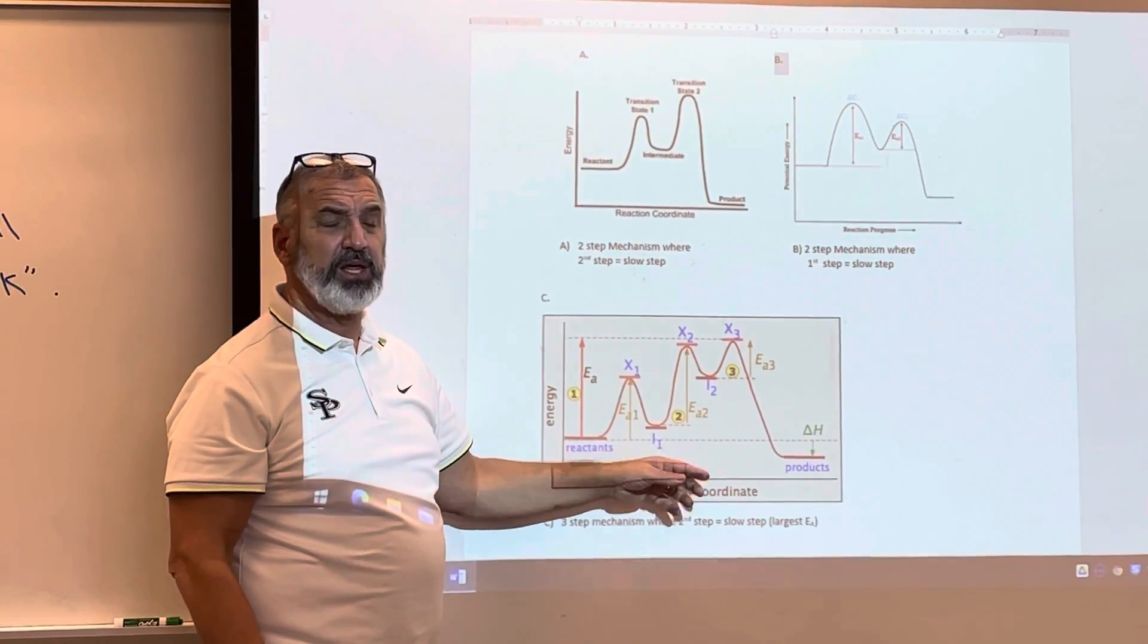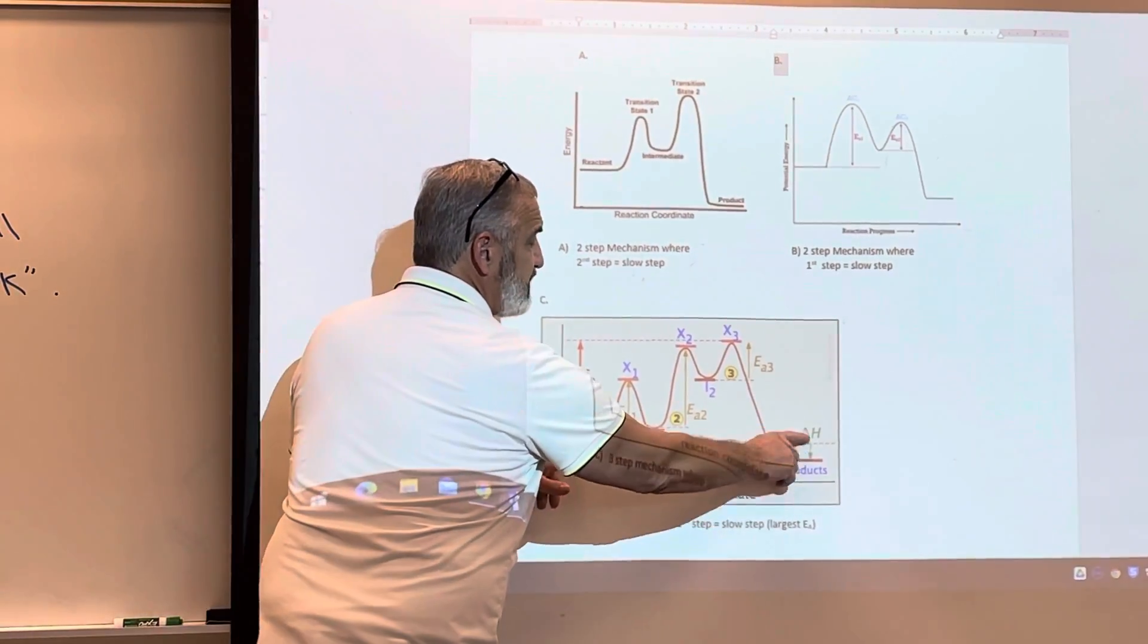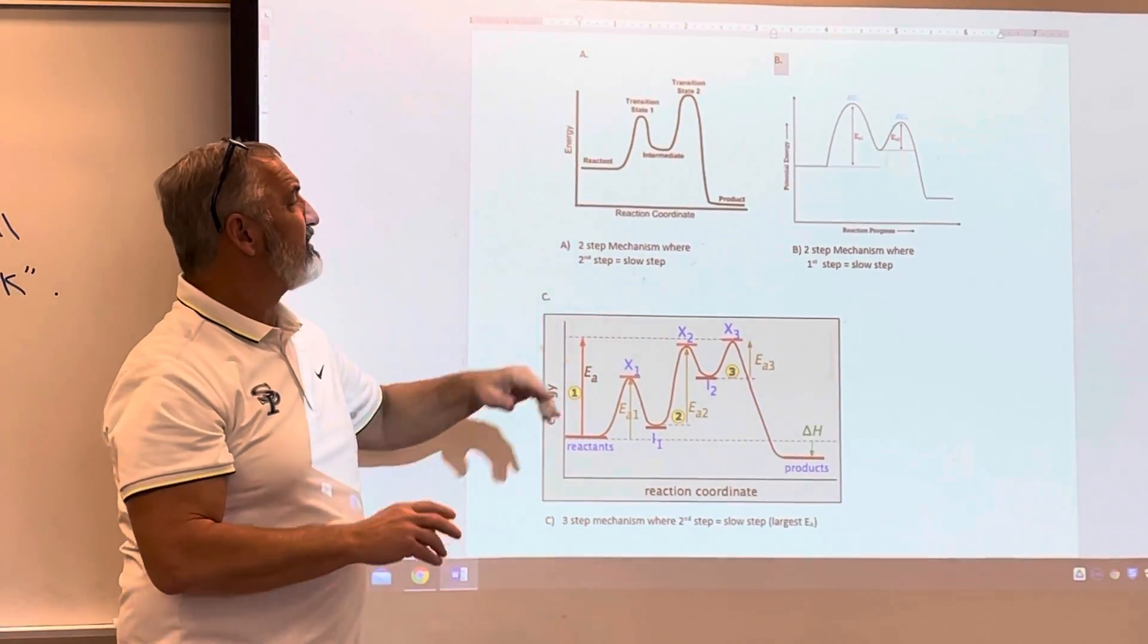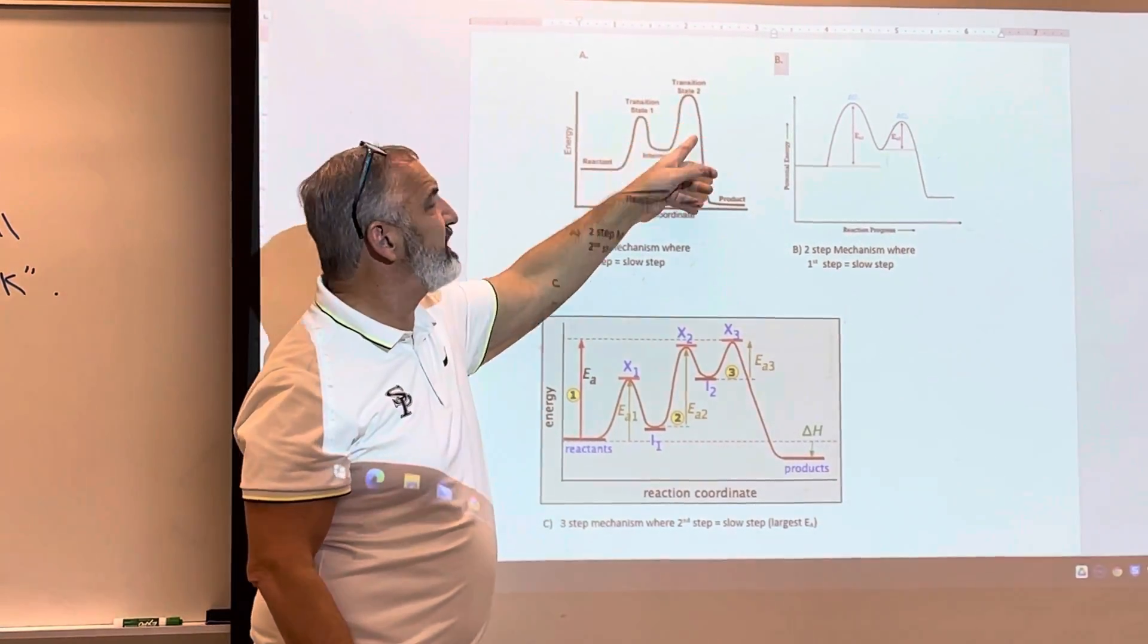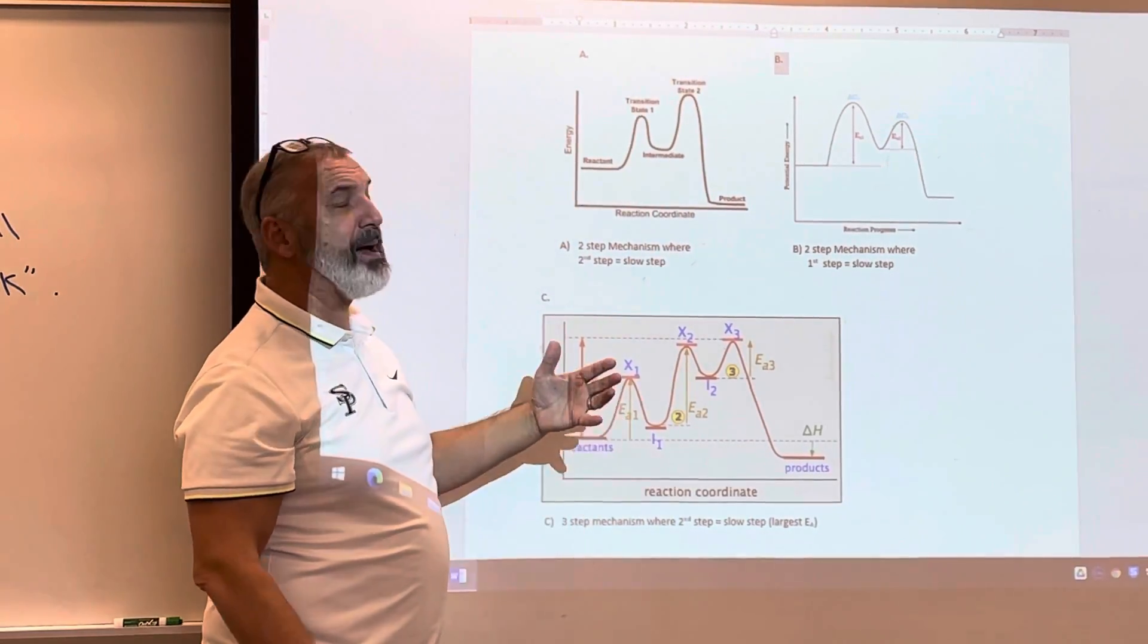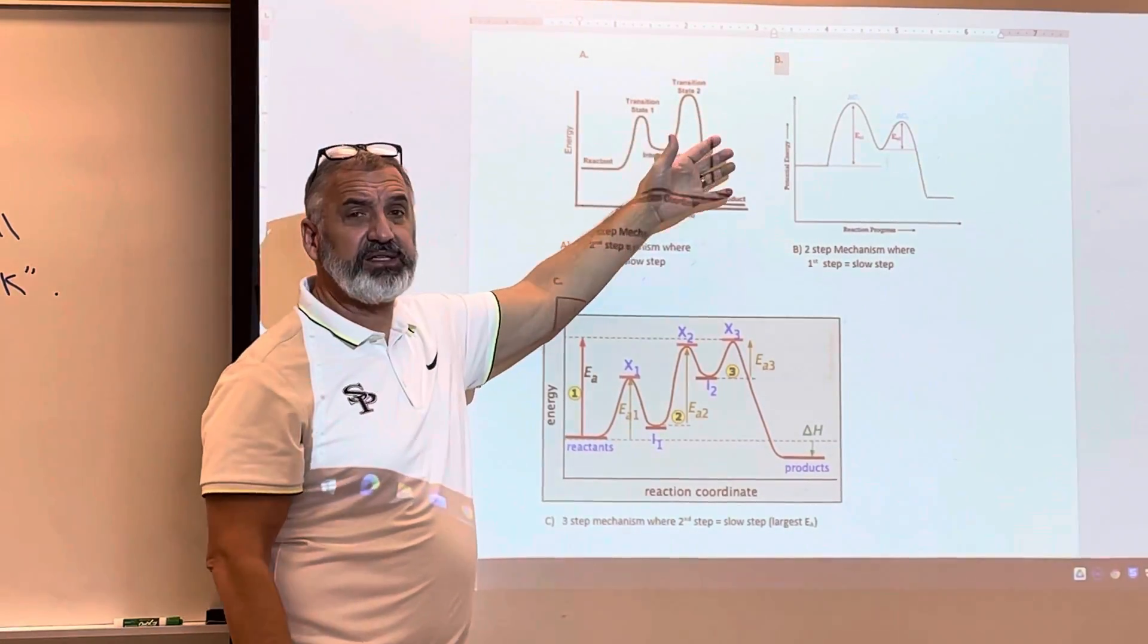So you still have the reactants and products, you're still going to have your delta H here. But this just kind of shows the intermediates and the activation energy of each individual step. So if it happened to be a six-step mechanism, well then you would have six different peaks.